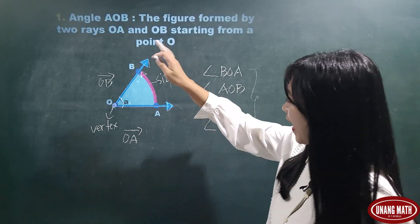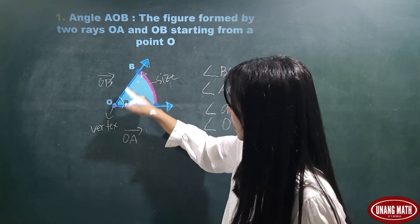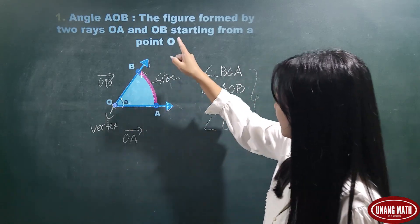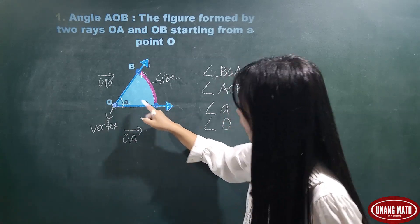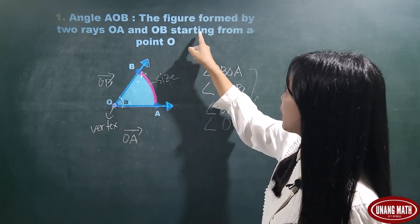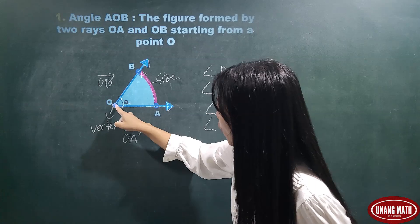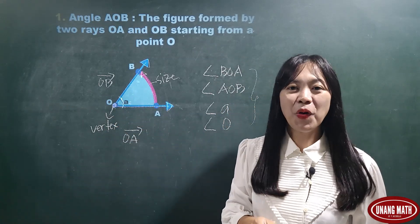So, in this figure, angle AOB or angle BOA, this is the figure formed by two rays OA and OB starting from a point O or vertex O.